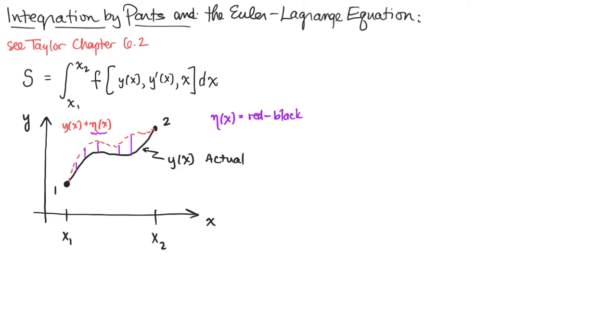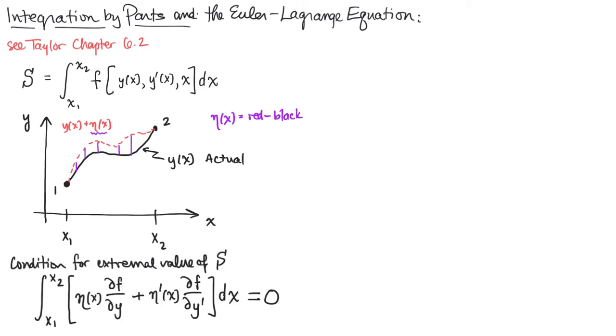So when we work this out, we're looking for the condition. So we see that the condition to extremize this integral is the following: that eta times the partial of f with respect to y plus eta prime, which is d eta dx, times the partial of f with respect to y prime, integrated over all x has to be zero.